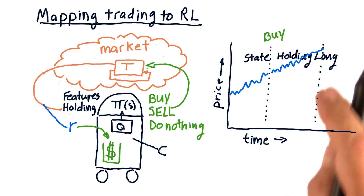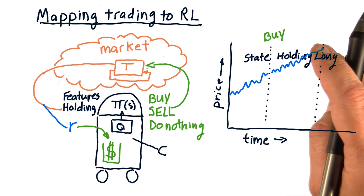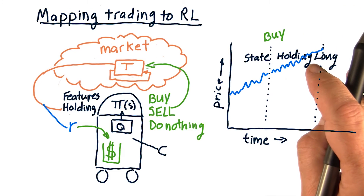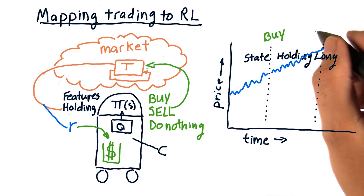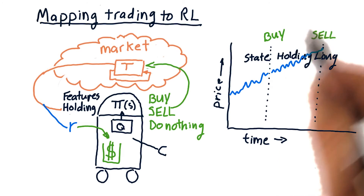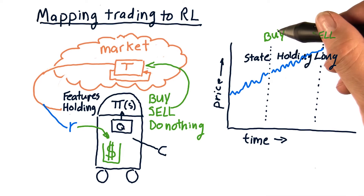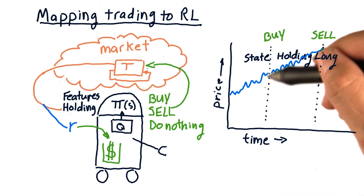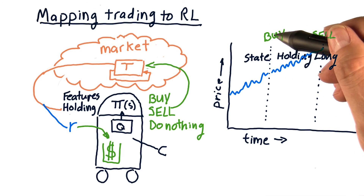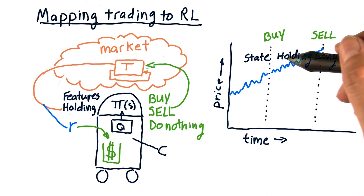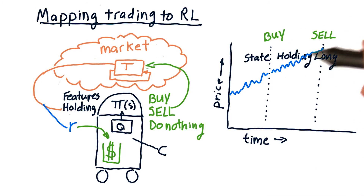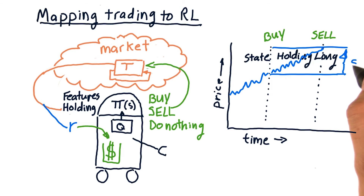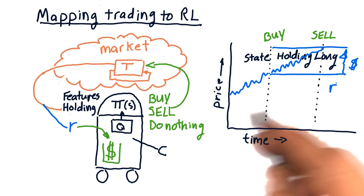We go forward and we're now in a new state where the price has gone up and we're holding long. Let's suppose we decide to sell at that point. So we've been in two states: in state one we were not holding and executed the action buy; we went forward in time, now holding long, and then executed the action sell. Note that we made money here, and that's our reward r.